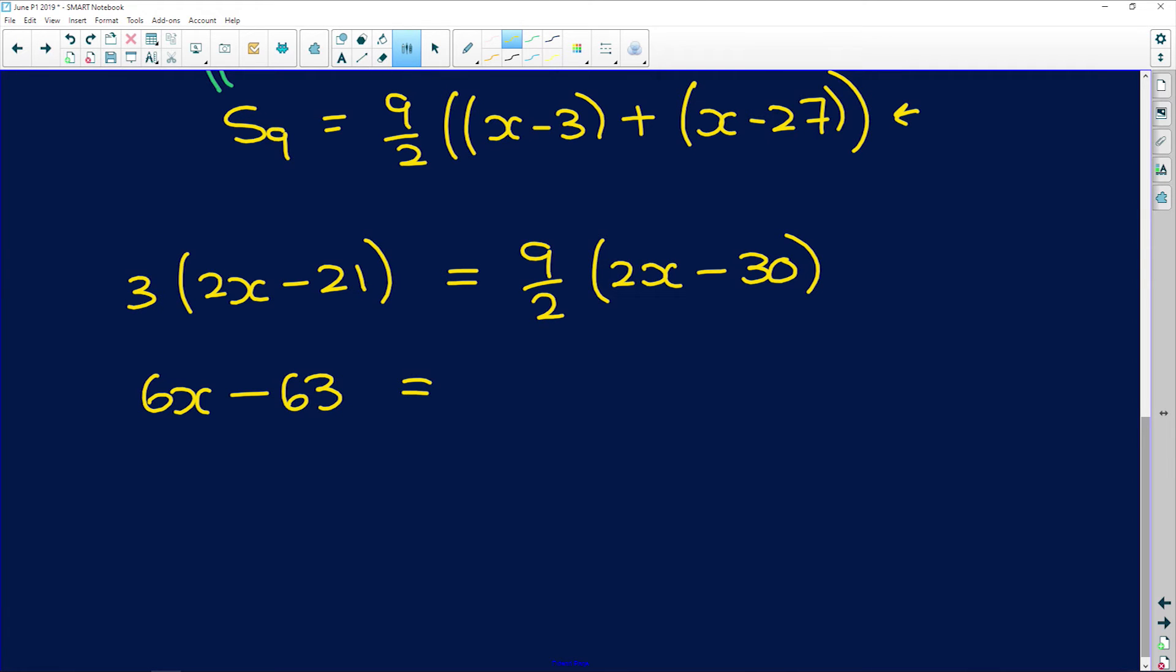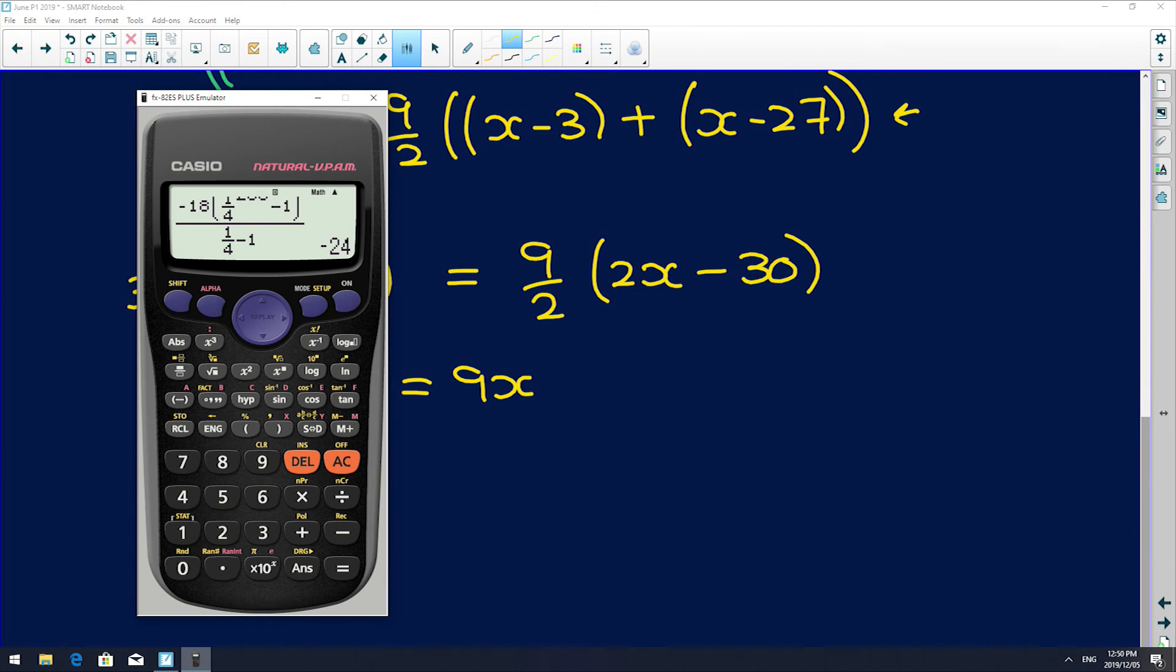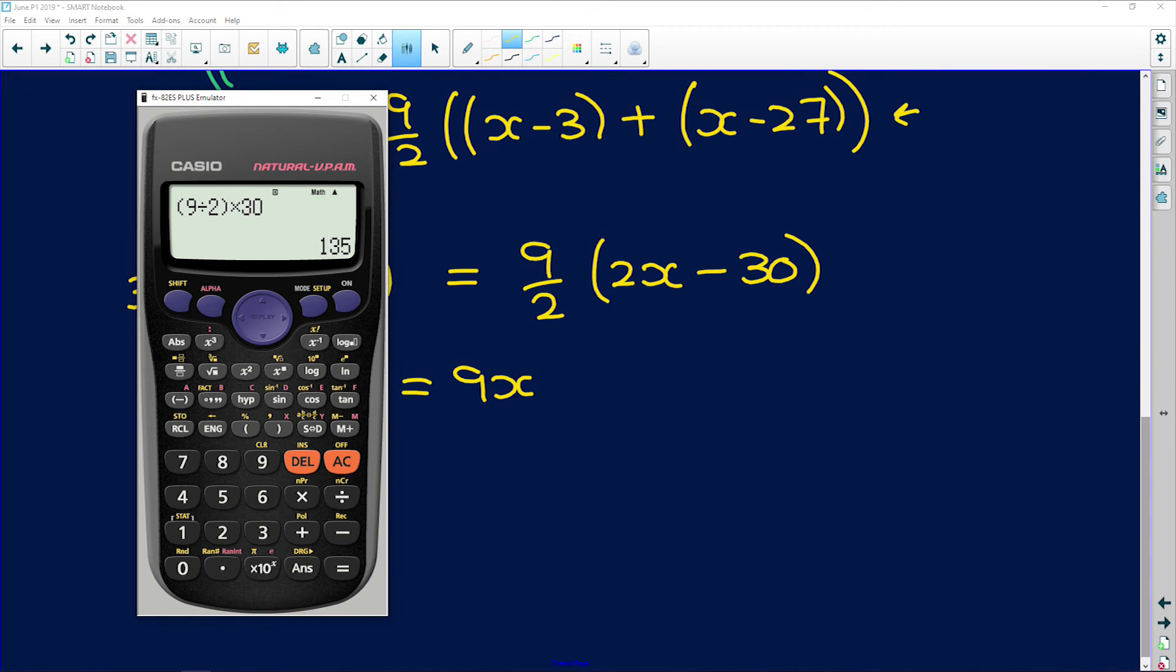And on the right hand side, 9 over 2 times 2x is just 9x, and 9 over 2 times negative 30, well 30 divided by 2 is 15, and 15 times 9 is a really big number. So I'm going to say 9 divided by 2 times 30 is going to give me 135.